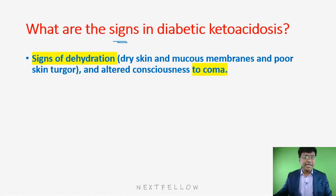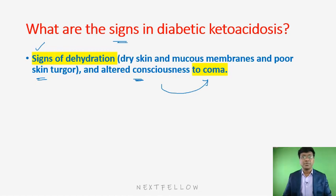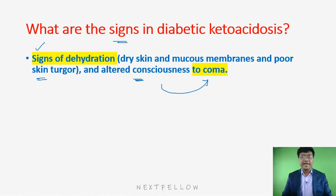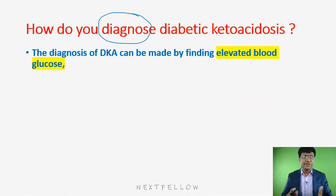Signs of diabetic ketoacidosis include signs of dehydration: dry skin and mucous membranes, poor skin turgor, and altered consciousness, with individuals ultimately going into coma. Dehydration results from glucosuria and osmotic diuresis. For diagnosis, there will be elevated blood glucose due to decreased insulin and reduced glucose utilization.